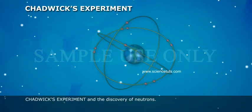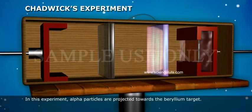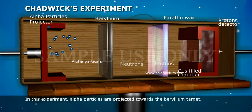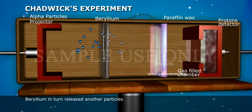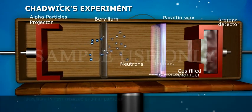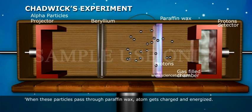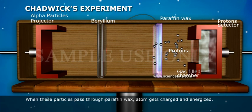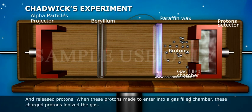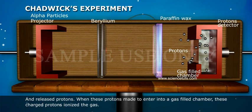Chadwick's experiment and the discovery of neutrons: In this experiment, alpha particles are projected towards the beryllium target. Beryllium in turn released other particles. These are neutral in nature. When these particles pass through paraffin wax, atoms get charged and energised and release protons. When these protons are made to enter into a gas-filled chamber, these charged protons ionised the gas.